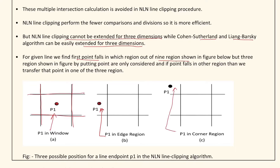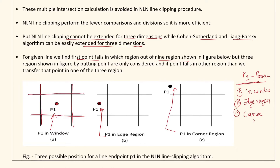We have to consider the position of P1 as one of three regions: first, it is inside the window; second, it is in an edge region; and third, it is in a corner region. The possible positions for a point P1 in the NLN line clipping algorithm will be shown in the figures.